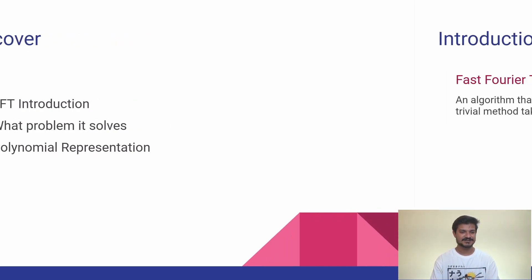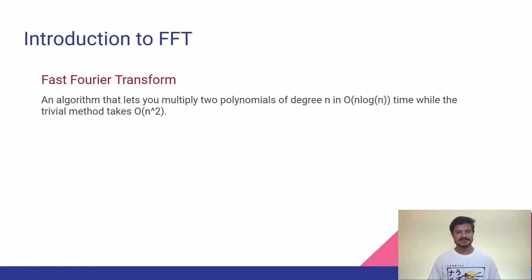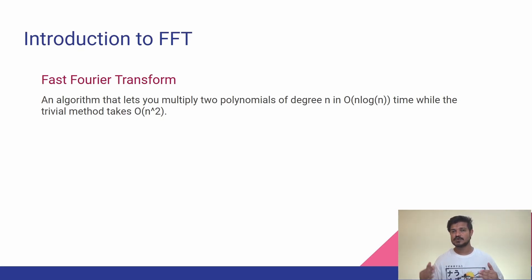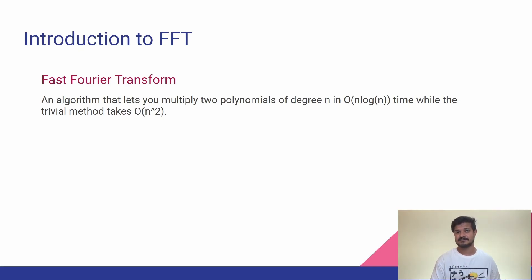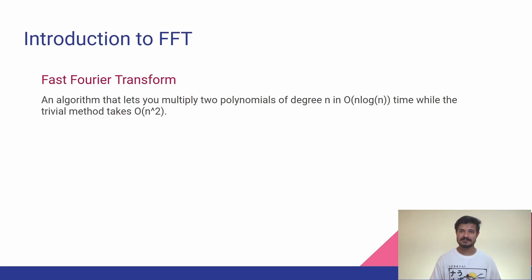First things first — introduction to FFT. FFT stands for Fast Fourier Transform, and it is an algorithm that lets you multiply two polynomials of degree n in O(n log n) time. There is a trivial method that does the exact same thing, but it takes O(n²) time, while FFT does it in O(n log n) time.